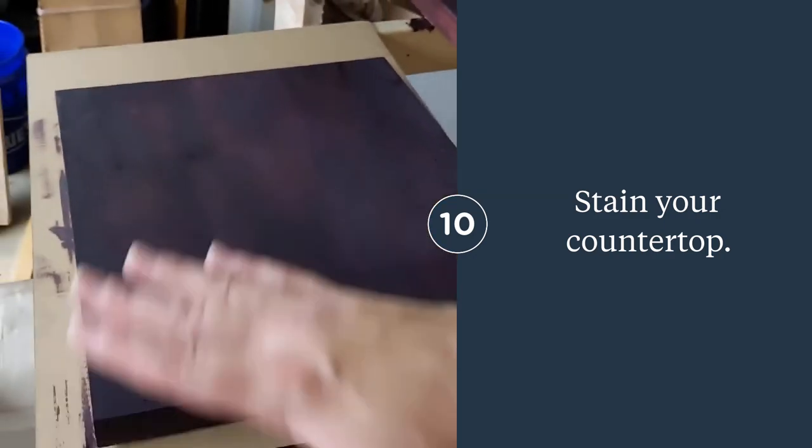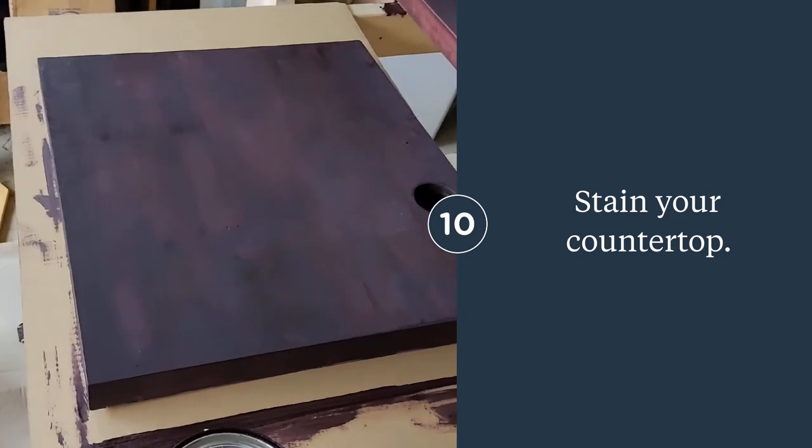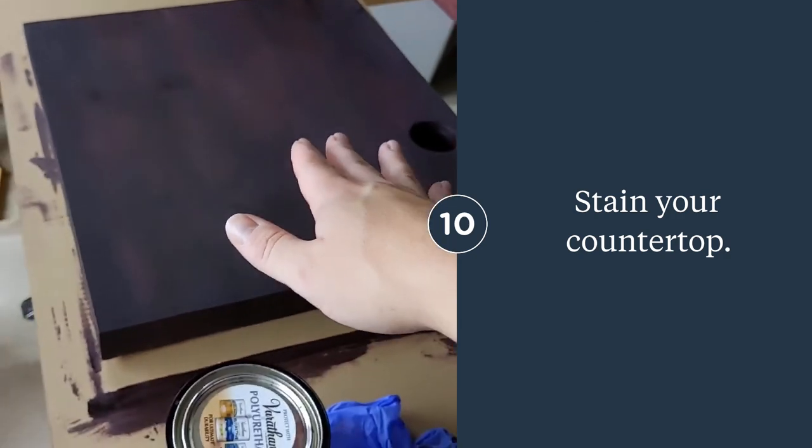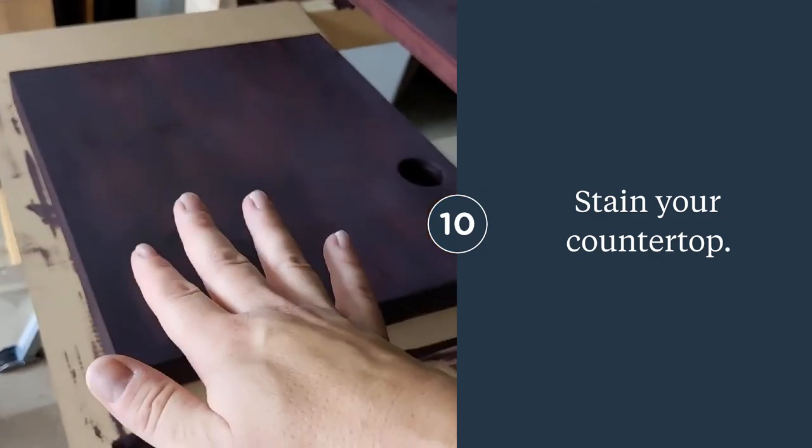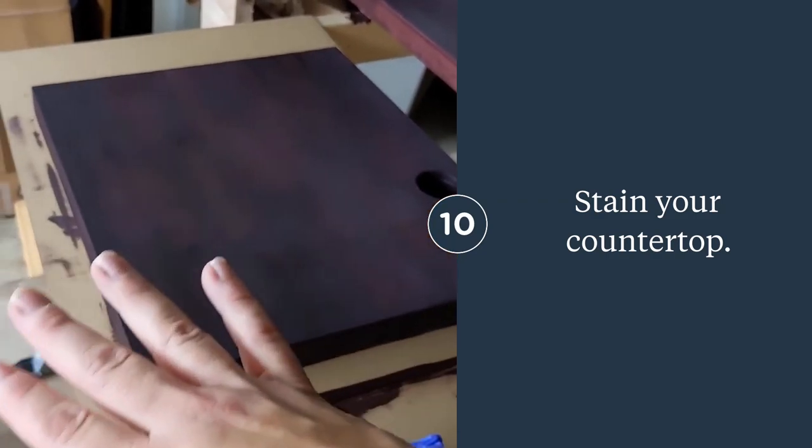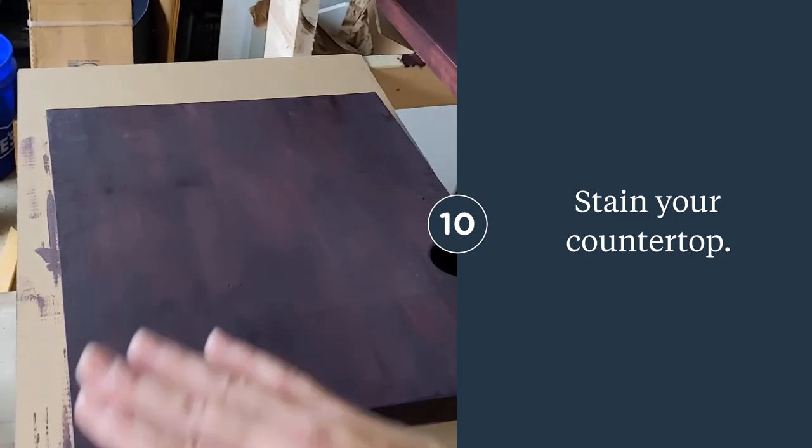I'm going to apply my polyurethane once this is dried for 24 to 48 hours, and then I'm going to add maybe two layers of polyurethane on the bottom.